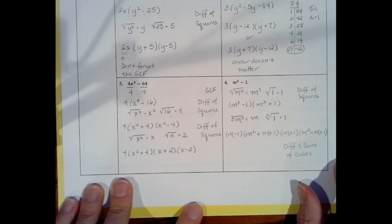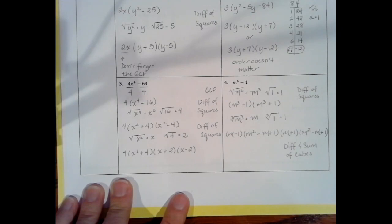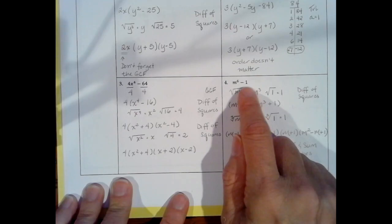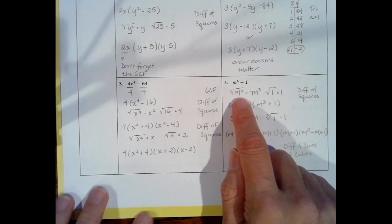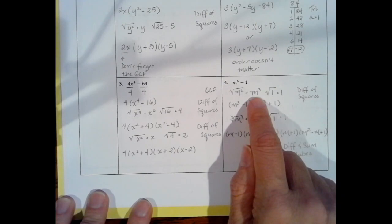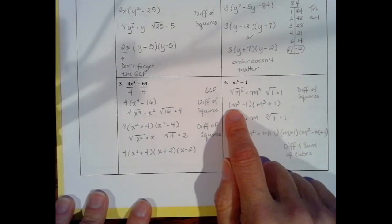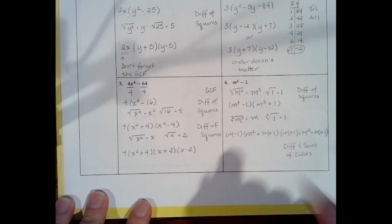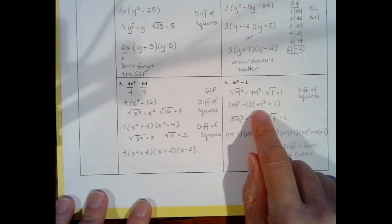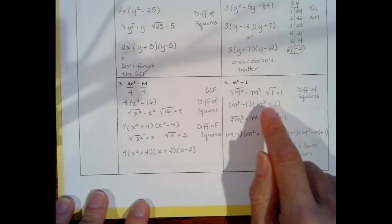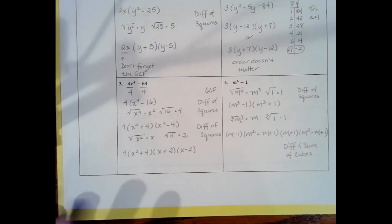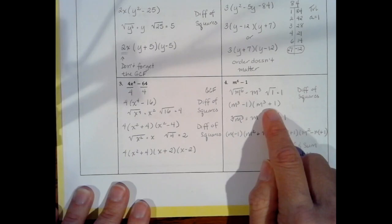Now let's look at m to the 6th minus 1. This looks deceptively easy, but it's not. There's no greatest common factor. However, I can take the square root of m to the 6th, which is m to the 3rd, and the square root of 1, which is 1. That leaves me with m cubed minus 1 times m cubed plus 1. Always check to see if we can factor again — and we can. We can take the cube root of m to the 3rd to get m, and the cube root of 1 to get 1, giving us a difference of cubes and a sum of cubes.